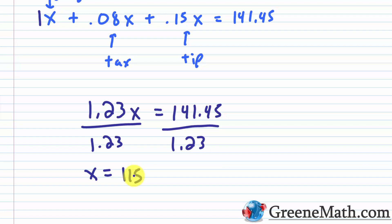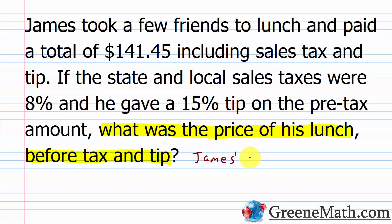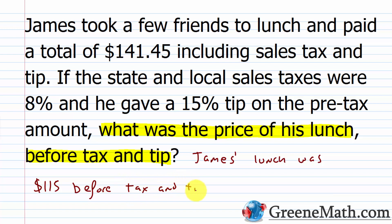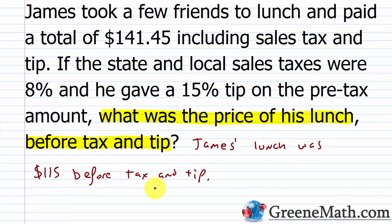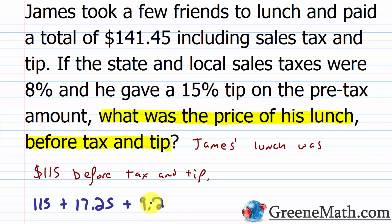James's lunch was $115 before tax and tip. To check: starting with $115, the tip is 15% of 115, which is $17.25. The sales tax is 8% of 115, which is $9.20. Adding $115 plus $17.25 plus $9.20 gives $141.45, confirming our solution is correct.